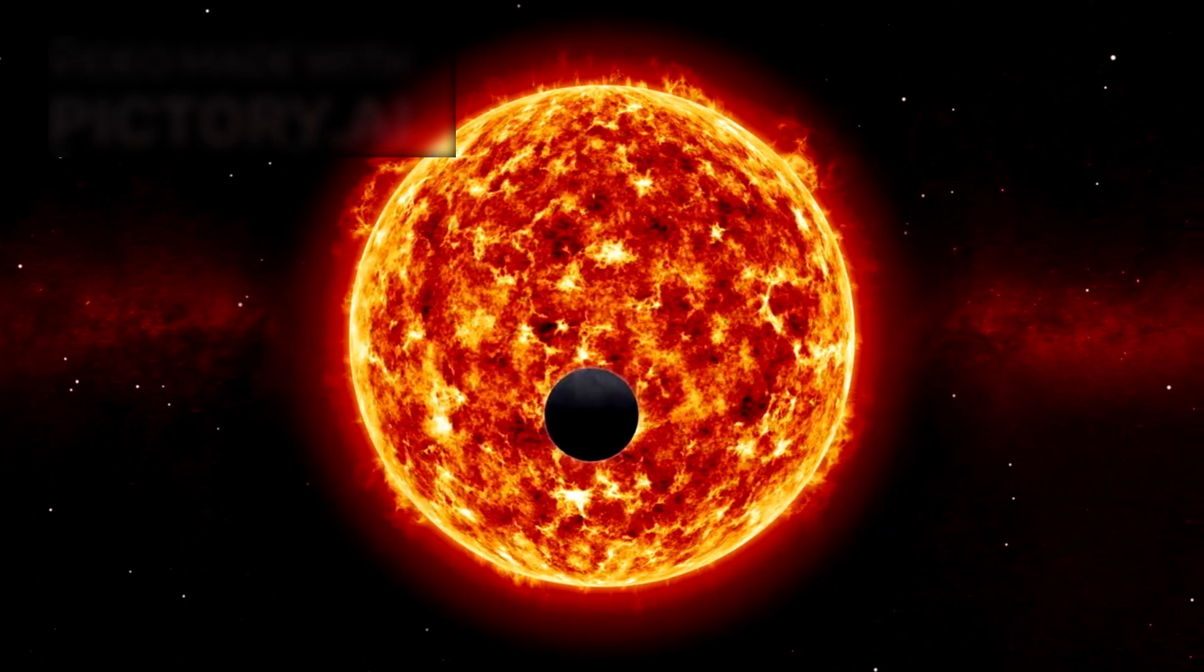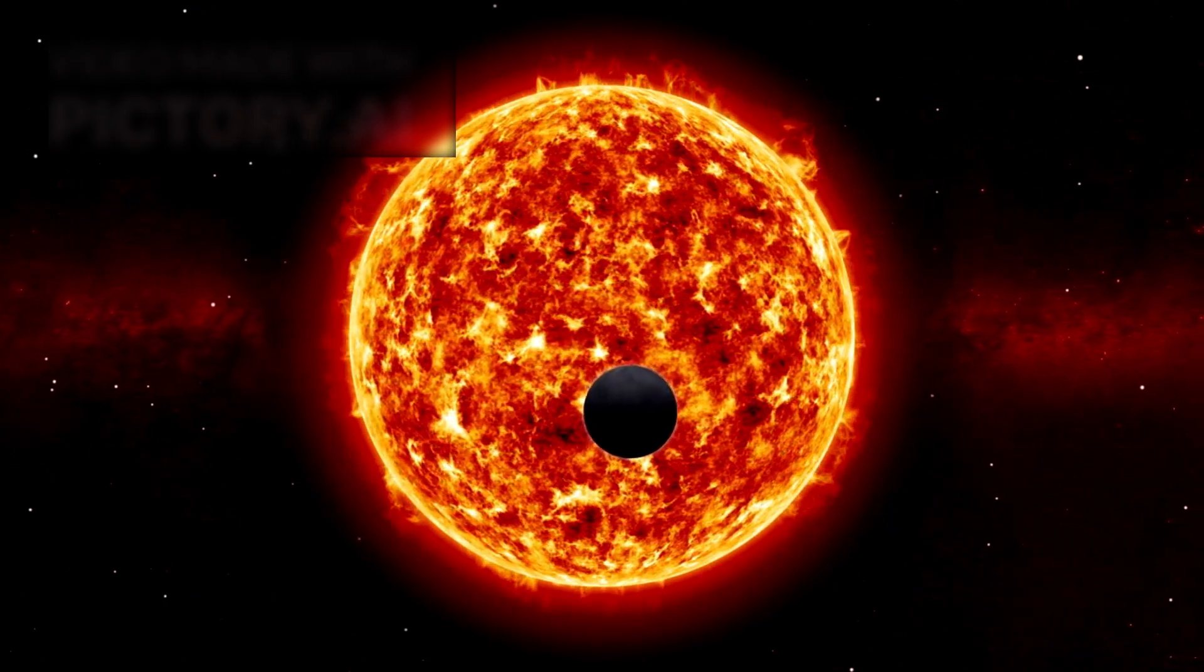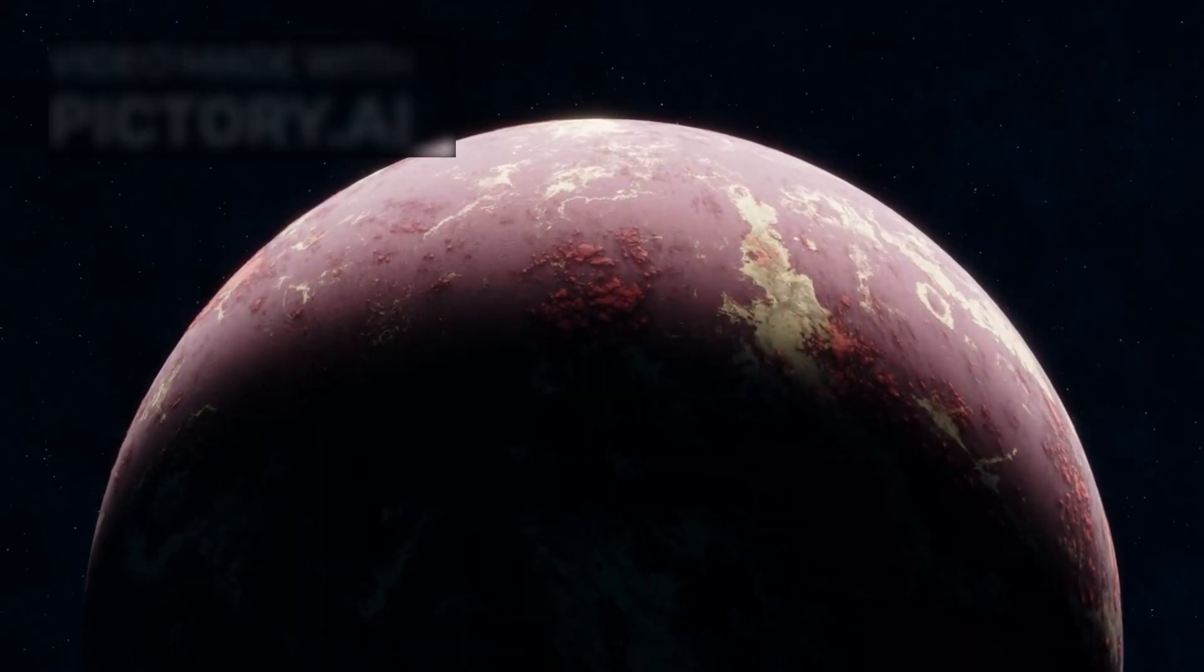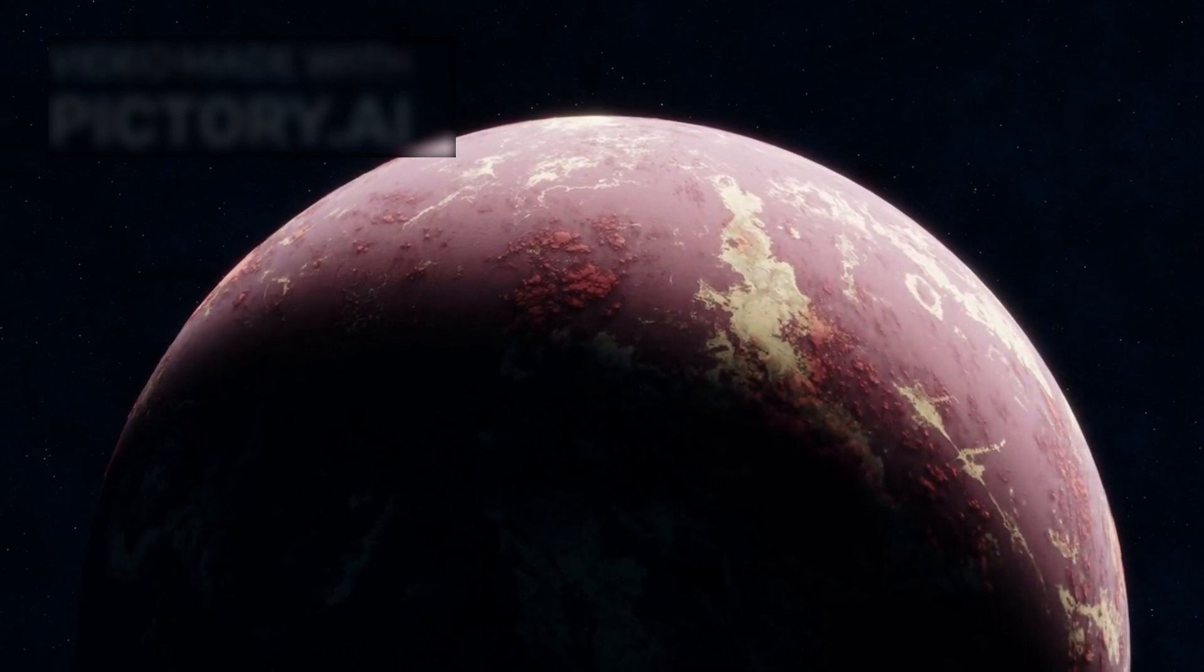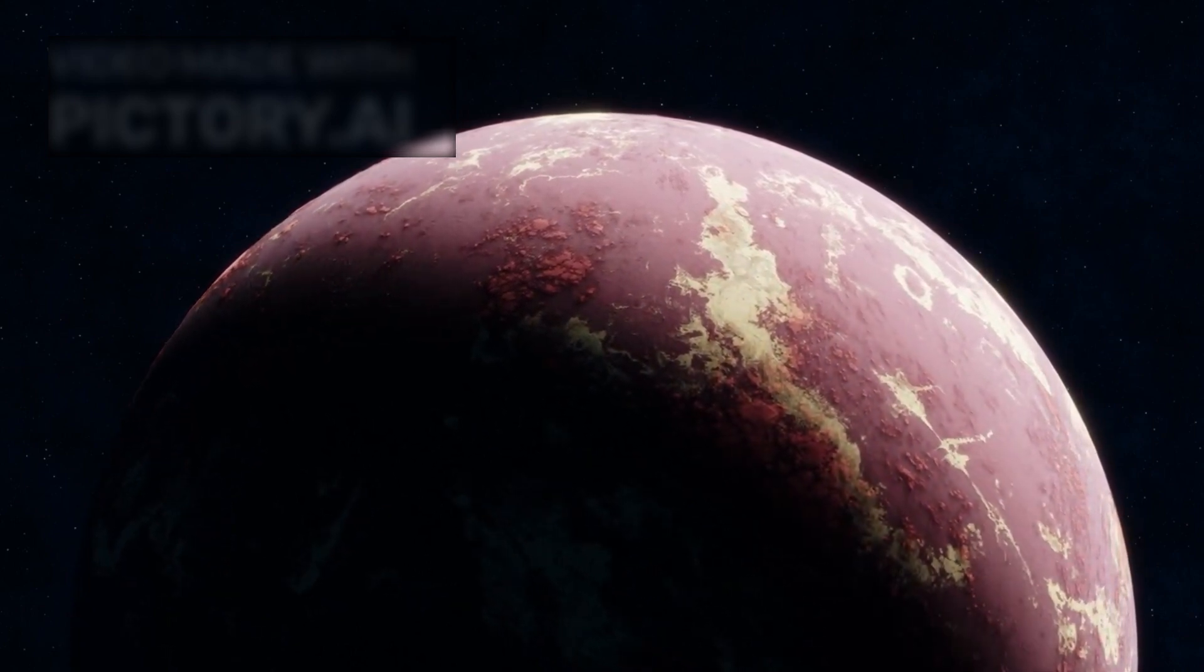Proxima Centauri B has a dynamic relationship with its star. Its tidally locked side captures the star's intense energy, reflecting a unique spectrum of light.